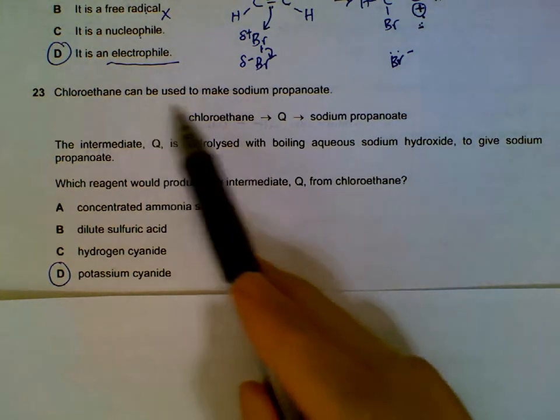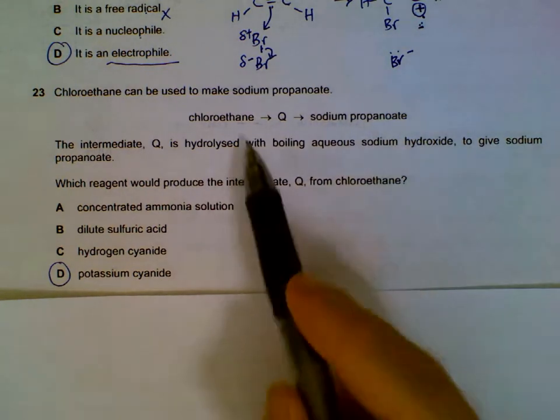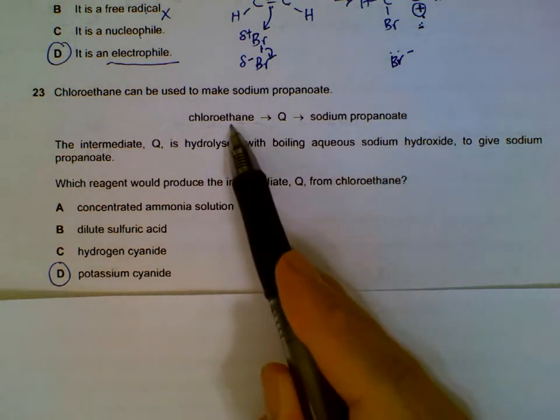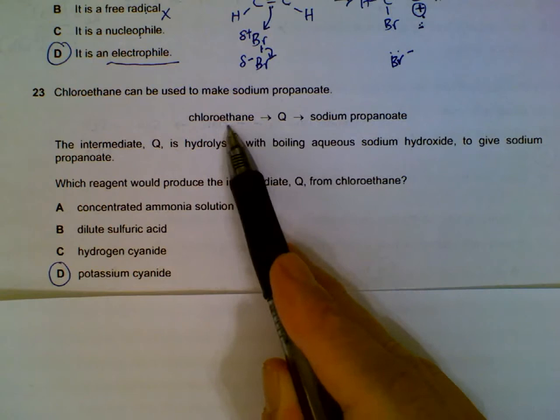Chloroethane can be used to make sodium propanoate. First thing to take note of is chloroethane actually has two carbons whereas sodium propanoate has three carbons, so somewhere along the line we must actually add a carbon to the chloroethane.